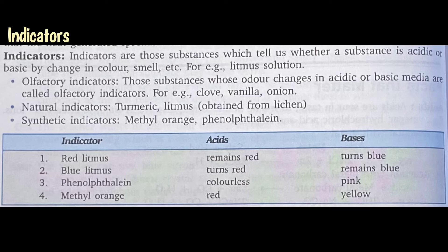Let us see the effect of indicators in acids and bases. Red litmus remains red in acids and turns blue in base. Blue litmus turns red in acids and remains blue in base. Phenolphthalein becomes colorless in acids — it is violet in color, and when acid is added it becomes colorless; if base is added, its color becomes pink. Methyl orange is orange in color — in presence of acid it turns red, and if base is present it turns yellow. With the help of these indicators you can identify whether a substance is an acid or a base.